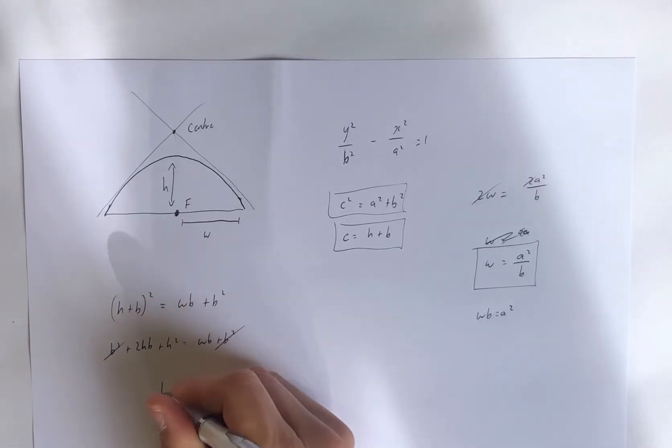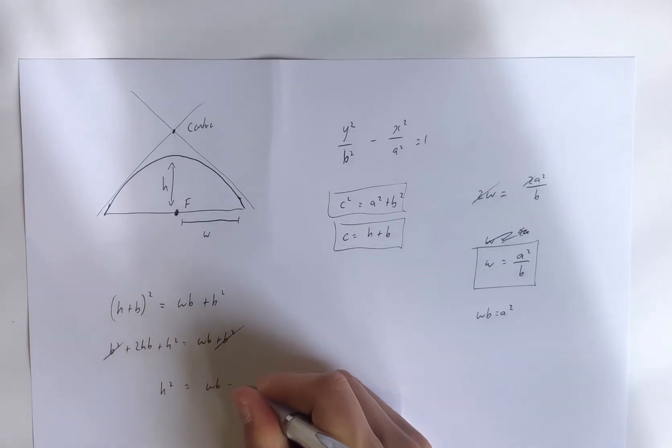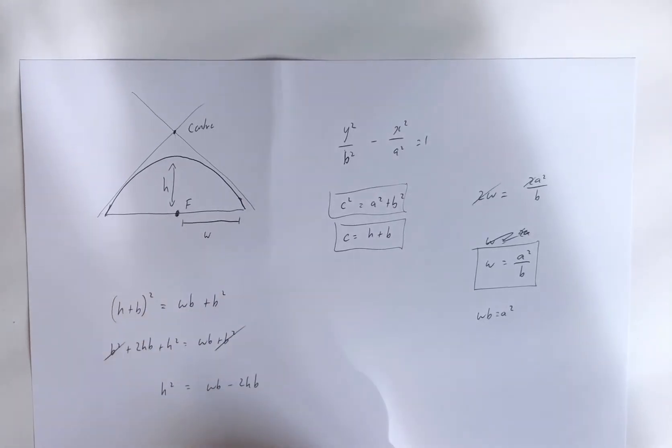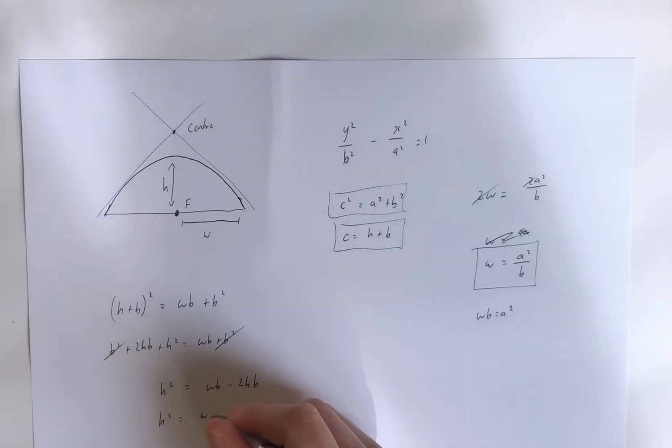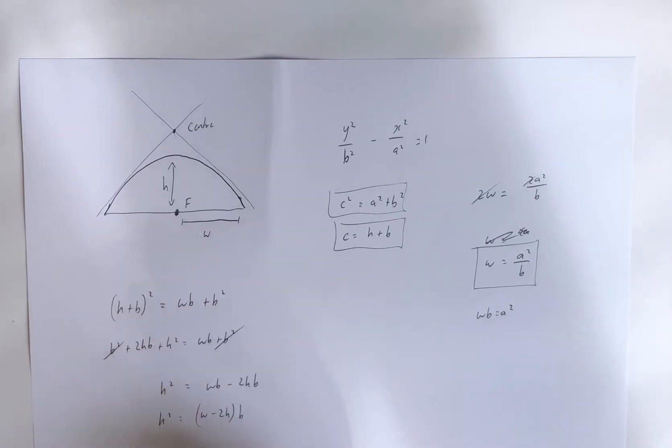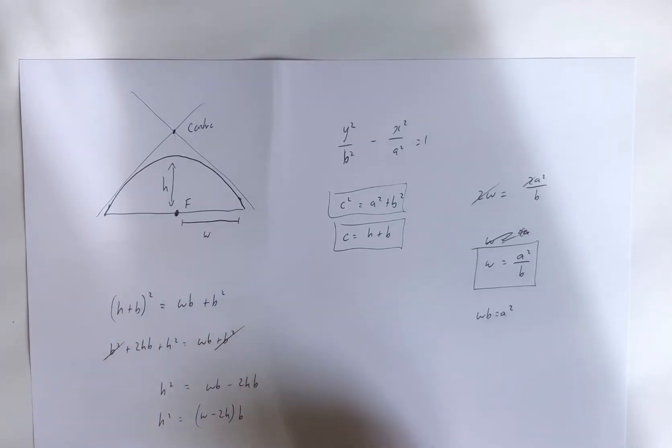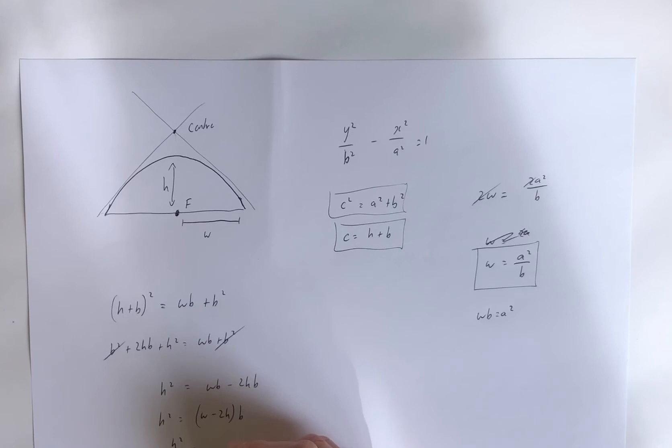So now where do we want to get to? Well, h squared is going to be wb minus 2hb. Factor the b. Divide by w minus 2h. And that's b.